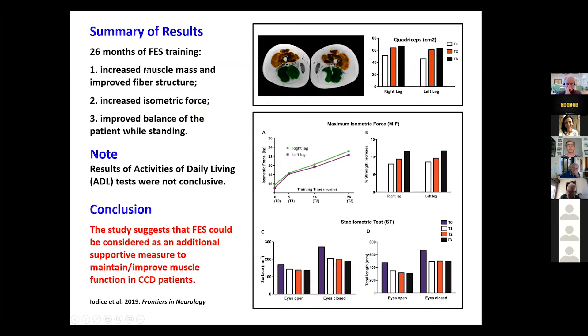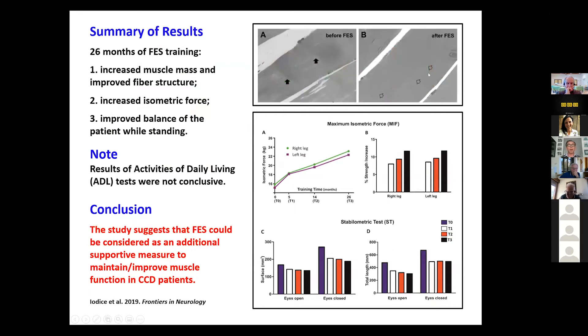We used functional electrical stimulation for 26 months in a patient, it was a female of 55 years of age. We got some results and this paper is published. We got increased muscle mass and improved muscle structure in the fibers and increased isometric force. We also measured the balance of the patient while standing, in open eye position and closed eye position, and we got some positive indication. But this was only one case report. Obviously the use of functional electrical stimulation has to be validated in this case, but this paper, Yodice is the first name, is published in 2019 in Frontiers in Neurology. This was a collaboration with a group in Vienna that provided us with a stimulator and with the protocols to apply to this patient.